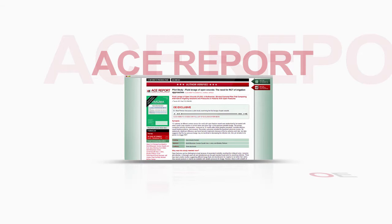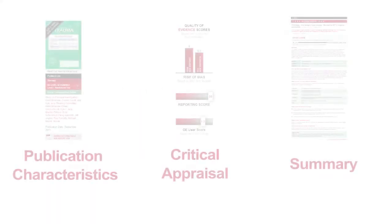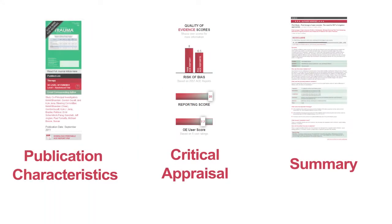While some information headings may change depending on the type of ACE report, its relative position is the same. The ACE report is made up of three main sections: publication characteristics, critical appraisal, and the summary.